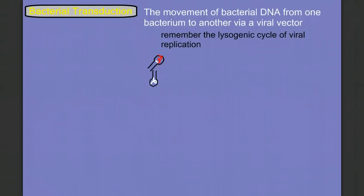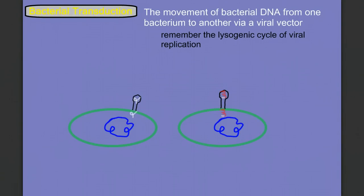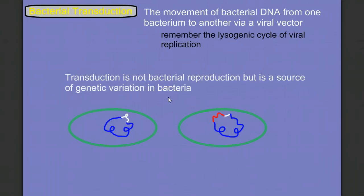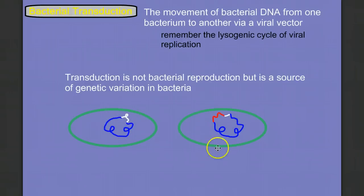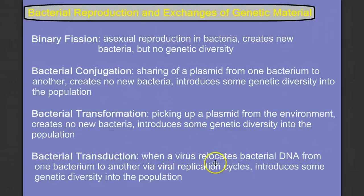These two bacteriophages are going to infect new bacteria cells and insert this DNA into the host cell's DNA. Transduction is not bacterial reproduction, but it is a source of genetic variation in bacteria. We've moved these genes from one bacteria into the genome of another bacteria which may have a whole different set of genes. Transduction can be described as when a virus relocates bacterial DNA from one bacterium to another via the viral replication cycles, introducing genetic diversity into the population.